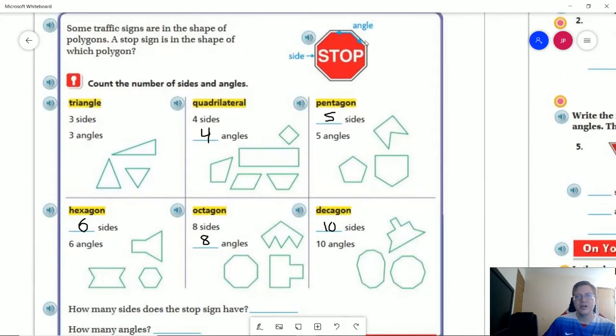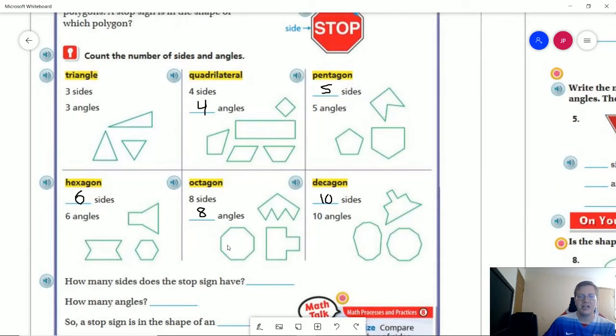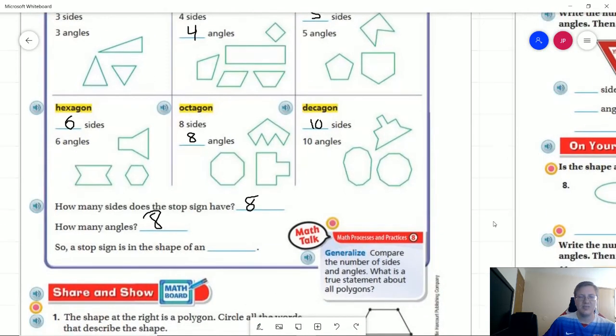And so to compare to our stop sign which is our most common example of an octagon, we see that again down here. We would have eight sides, eight angles, and is the shape of a stop sign. We would say that that would be an octagon.